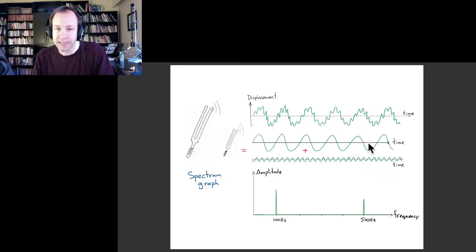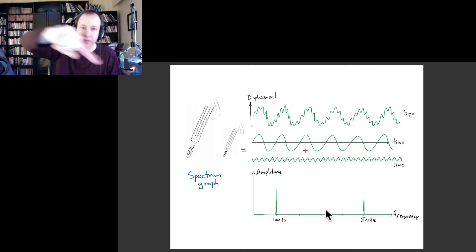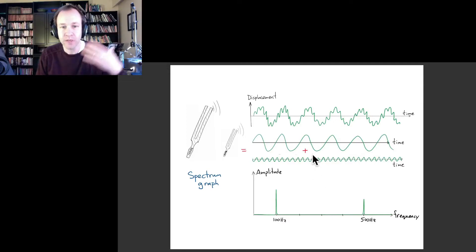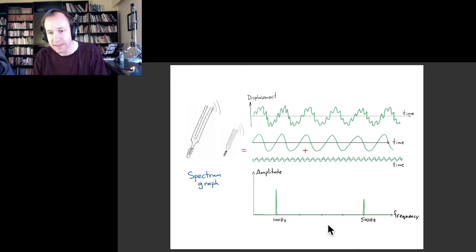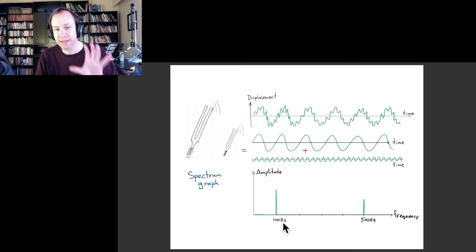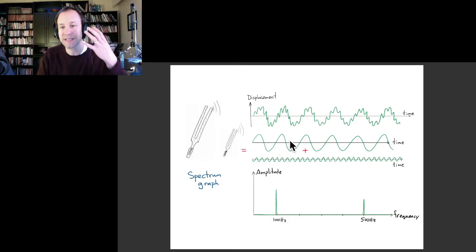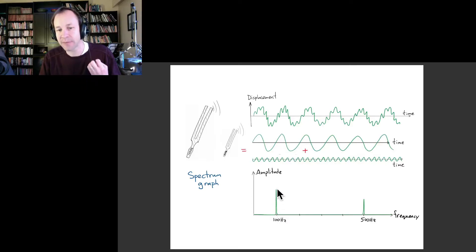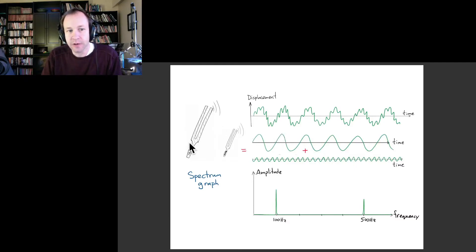Now we're ready to convert this information into a spectrum graph. Instead of having to draw all of these wiggles, the spectrum graph already takes that into account — each frequency on the spectrum graph implies a sinusoidal curve with that frequency where the graph is not zero. In this case, we just have two frequencies: 100 hertz and 500 hertz. The spectrum graph shows the amplitude for each of those, and we've concluded that the lower frequency one has a larger amplitude and the higher frequency one has a smaller amplitude.